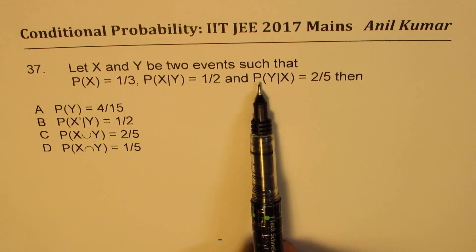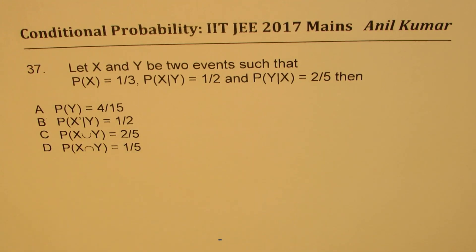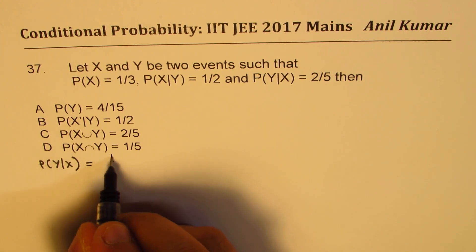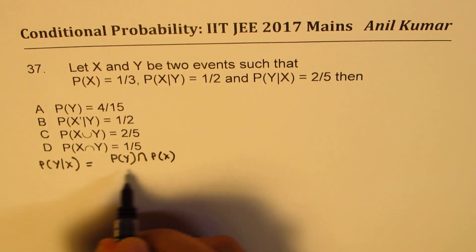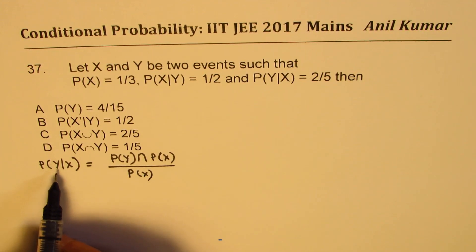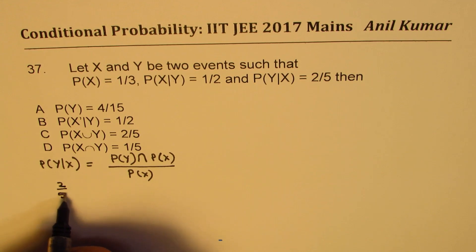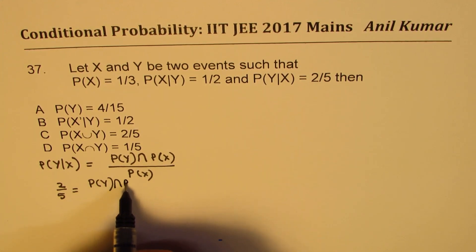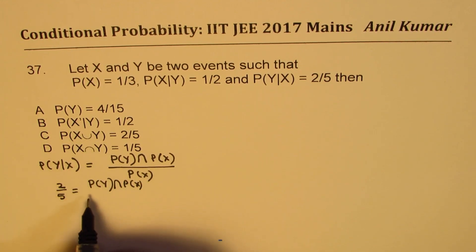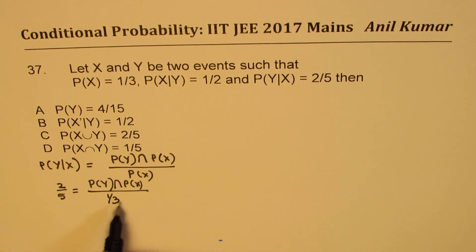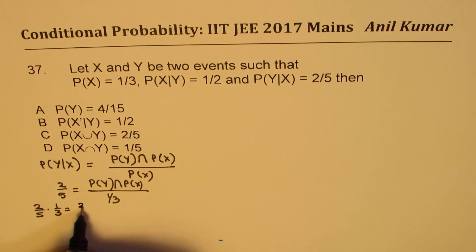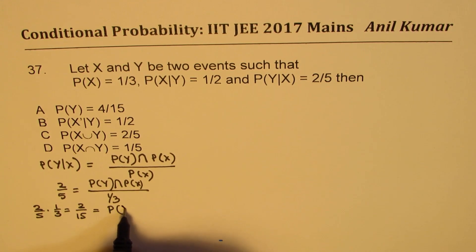We should begin with probability of Y when X has occurred, since we know the probability of X. The probability of Y given X is P(Y∩X) divided by P(X). Probability of Y given X is two over five, equal to the intersection of X and Y divided by probability of X, which is one over three. Cross-multiplying, we get two over five times one over three, which is two over 15. That is the probability of intersection of X and Y.